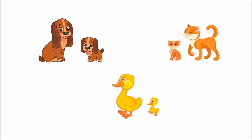Here we can see different pet animals and their babies. These babies are called young ones. Young ones are small and lovely. The young ones have different names. The first one is puppy — a dog has a puppy. The puppy has a small tail. The next one is kitten. The kitten has two small ears. The kitten likes to drink milk. And the last word is duckling. The duckling is yellow in colour.